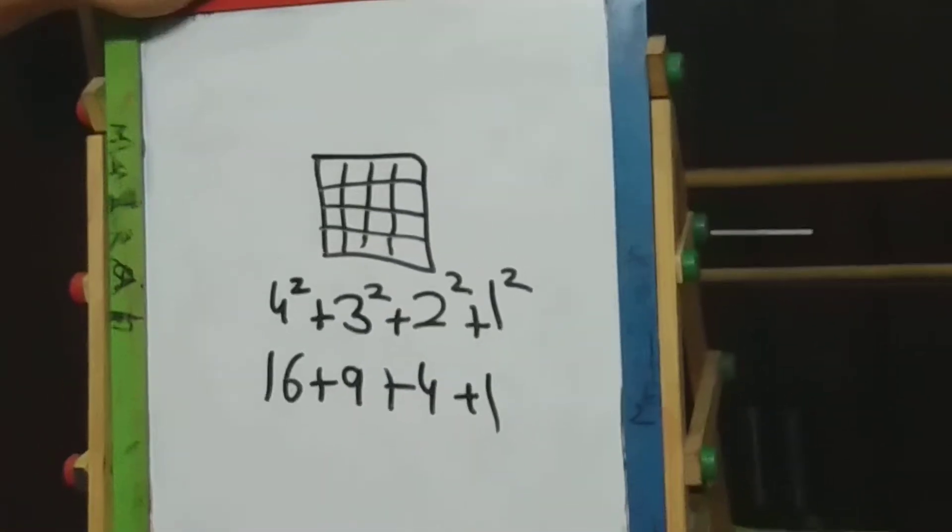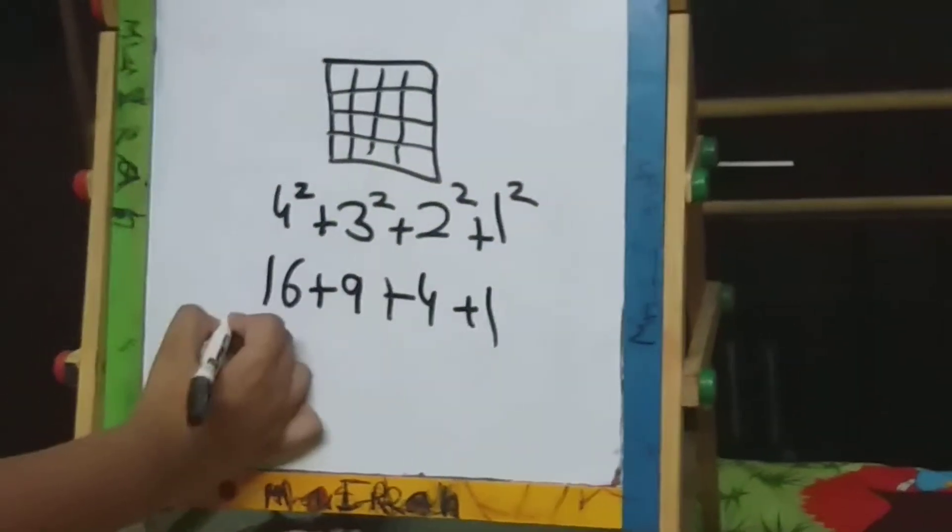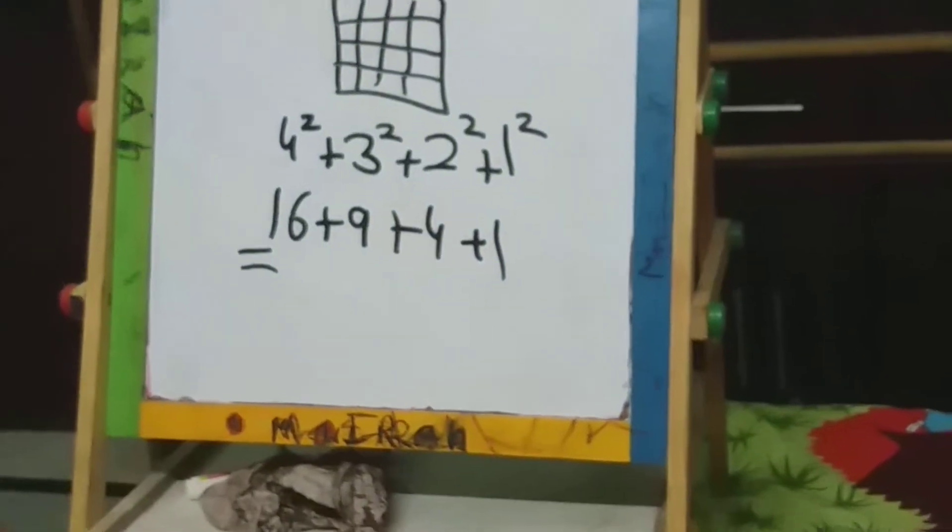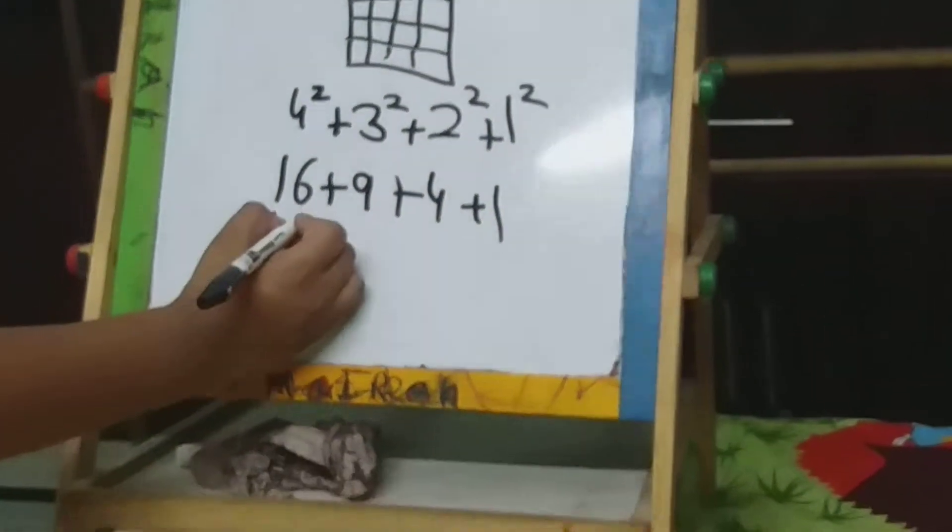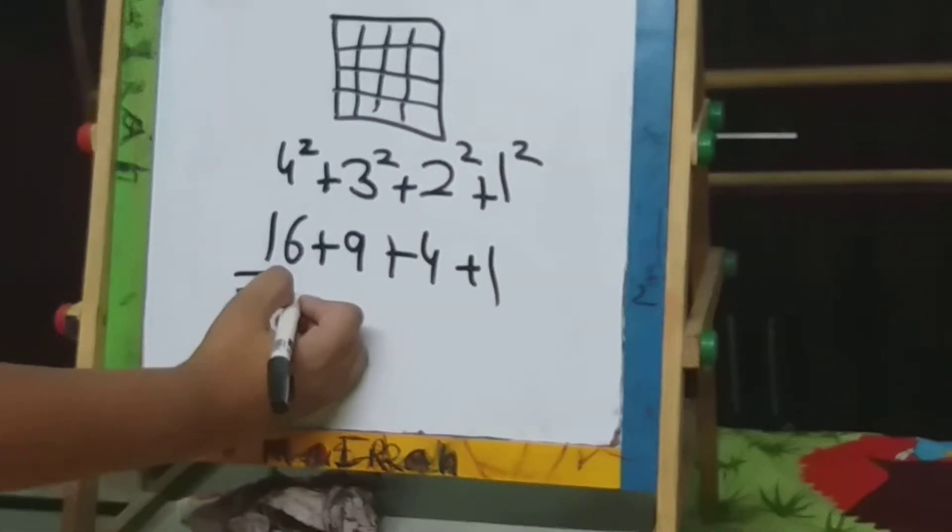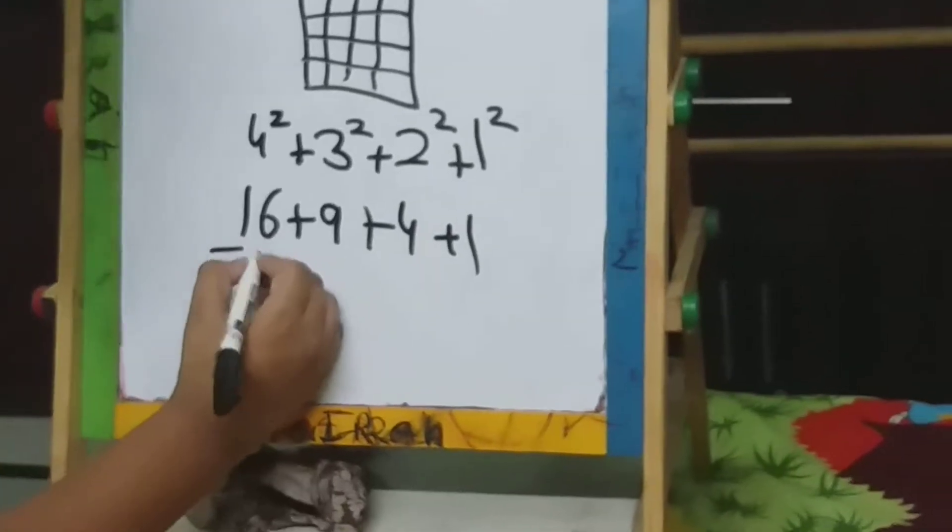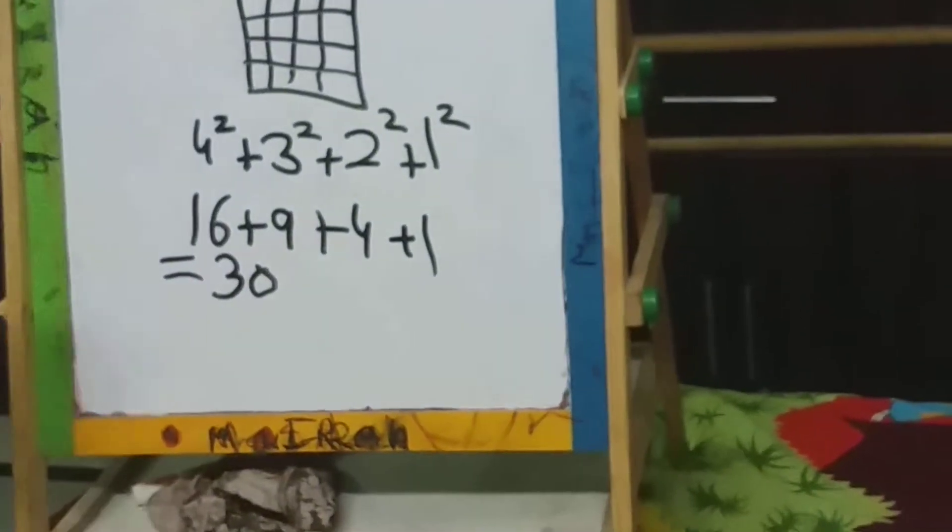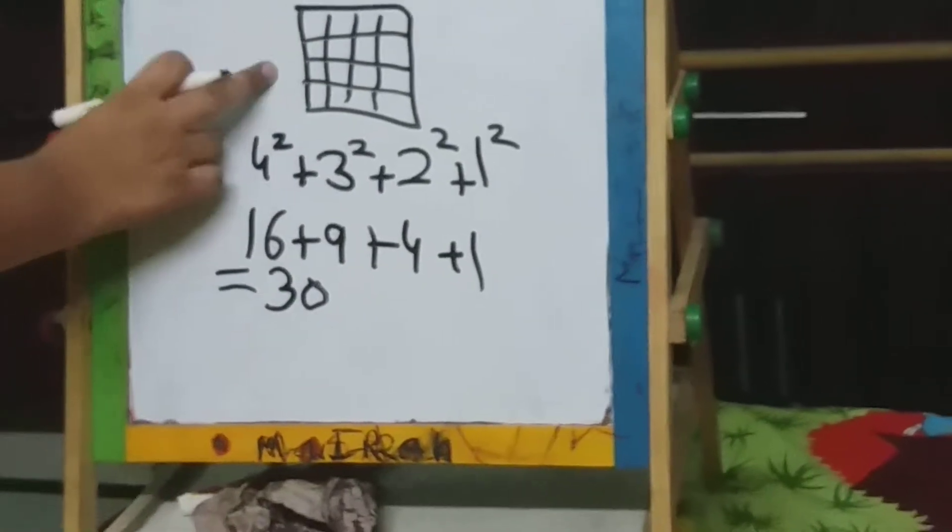So the sum of all these is 30. So we have 30 squares in this square.